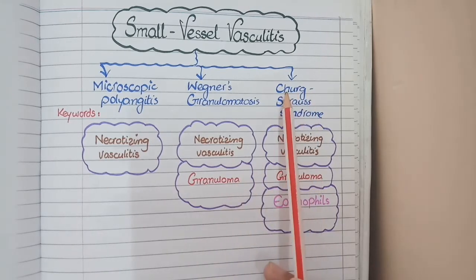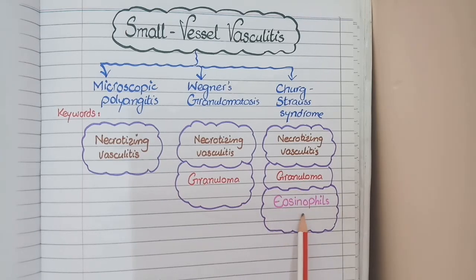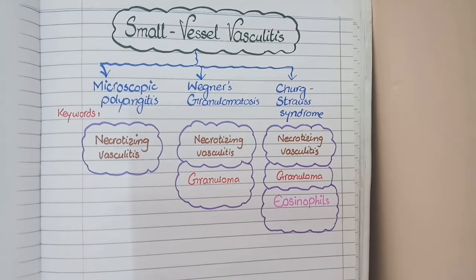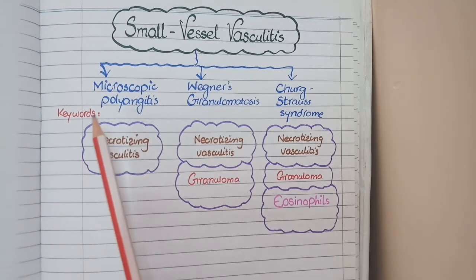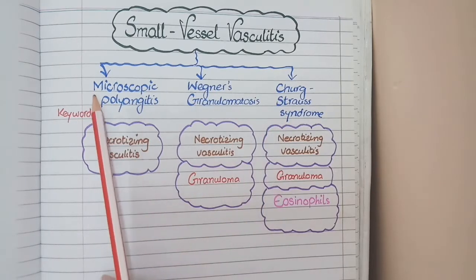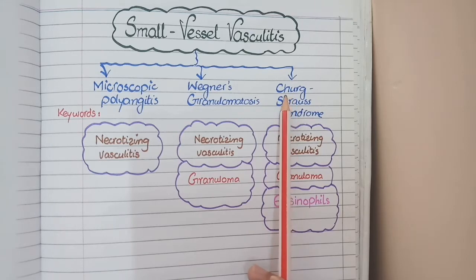The third disease is Churg-Strauss syndrome, in which in addition to necrotizing vasculitis and granulomas there is presence of eosinophils. These three diseases make up a spectrum of disorders where one additional feature occurs at each subsequent level. You can remember the order of this spectrum with the acronym MWC: M for microscopic polyangitis, W for Wegener's granulomatosis, and C for Churg-Strauss syndrome.